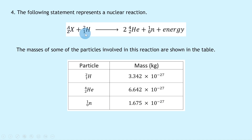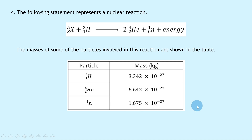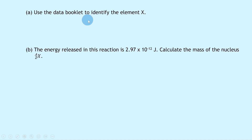Question 4: an unknown element X plus hydrogen-2 decays into two alpha particles (helium nuclei) plus a neutron plus energy. The masses of some particles are given: hydrogen-2 is 3.342×10⁻²⁷ kg, the alpha particle is 6.642×10⁻²⁷ kg, and the neutron is 1.675×10⁻²⁷ kg.